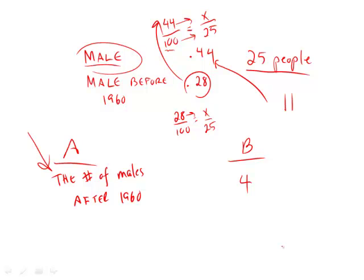7 males born before 1960, and there are a total, remember here, of 11 males, meaning that 4 of them were born after 1960, and just like that, we have an answer C.